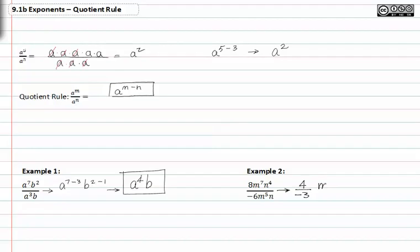m to the seventh over m to the fifth have five m's in common, so we'll rewrite that as m to the seven minus five, negative n to the fourth minus one.